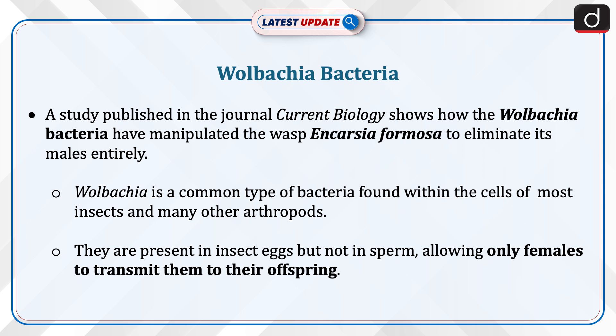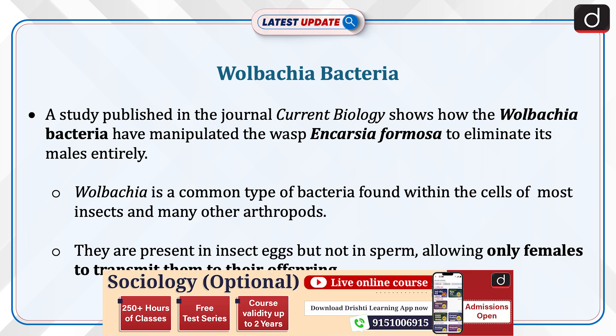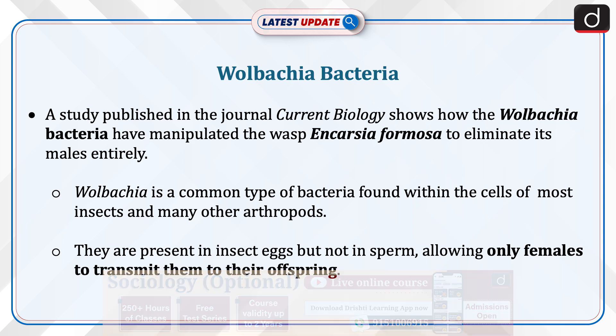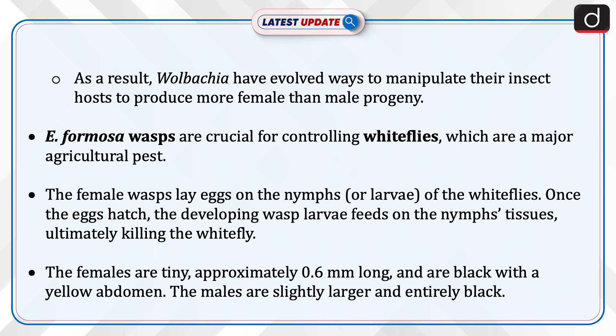Wolbachia is a common type of bacteria found within the cells of most insects and many other arthropods. They are present in insect eggs but not in sperm, allowing only females to transmit them to their offspring. As a result, Wolbachia have evolved ways to manipulate their insect host to produce more female than male progeny.